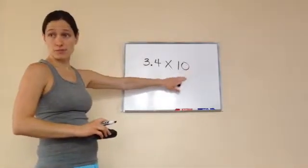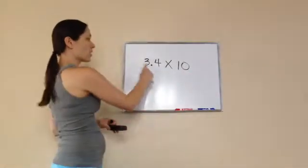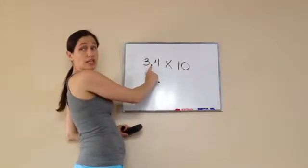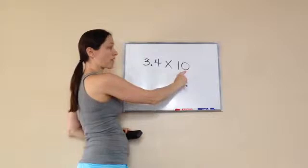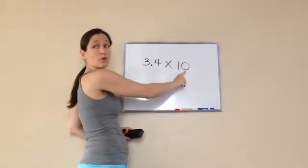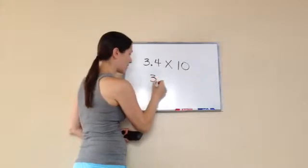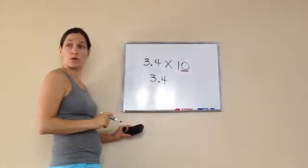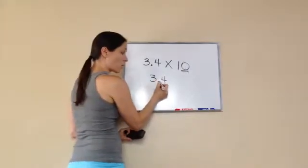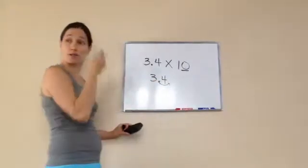Okay, there's an easier way than that when you're working with 10, 100, 1000, million - all those. All you do is look at the decimal, and however many zeros there are is how many times you move the decimal to the right. So if I have 3.4, I have how many zeros? One. So I'm going to move this decimal one spot to the right.